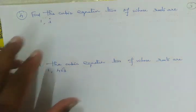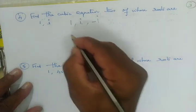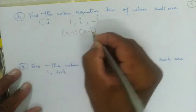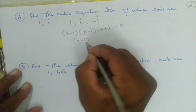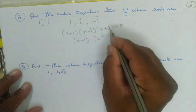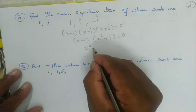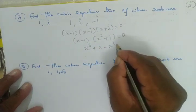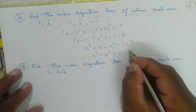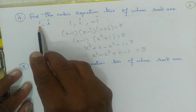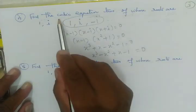If we are given 2 roots: 1 and i, we take the conjugate of the imaginary root i, which gives -i. So we now have 3 roots: 1, i, -i. Using these: (x-1)(x-i)(x+i) = 0, giving (x-1)(x²+1) = 0, which expands to x³ - x² + x - 1 = 0. This is the cubic equation.